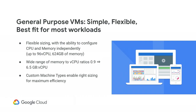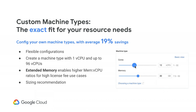What's also very important about the general purpose machine types is that with custom machine types available on Google Cloud Platform, right-sizing becomes something you can actually do on the cloud so that you don't over-provision. As you can see here, these sliders allow you to configure the machine type to exactly what fits your needs. With custom machine types, you can build an exact fit and prevent any wasted resources. We've seen customers benefit from more than 19% savings versus just using predefined instances.